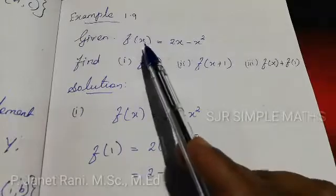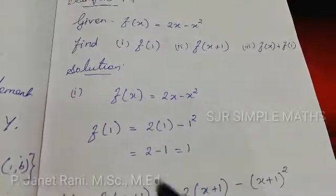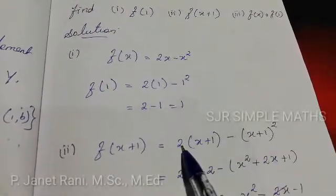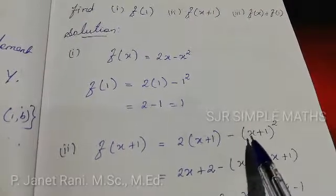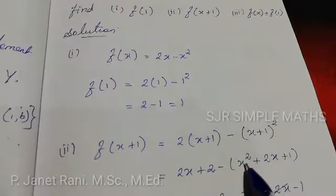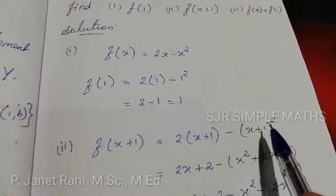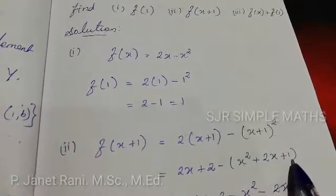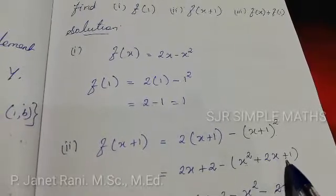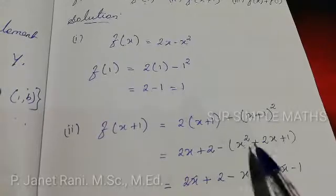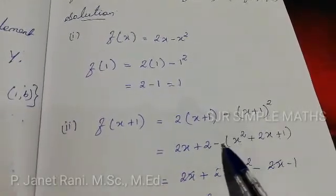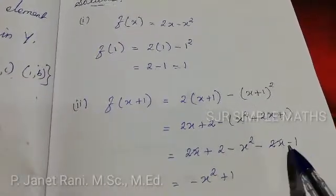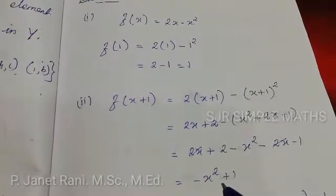Next, f(x+1): substitute x = x+1. f(x+1) = 2(x+1) - (x+1)². Expanding: 2x + 2 - (x² + 2x + 1). Using the (a+b)² = a² + 2ab + b² formula, this gives 2x + 2 - x² - 2x - 1. The 2x terms cancel, giving -x² + 1.